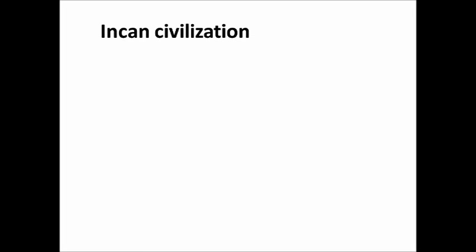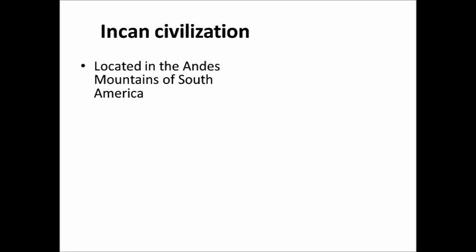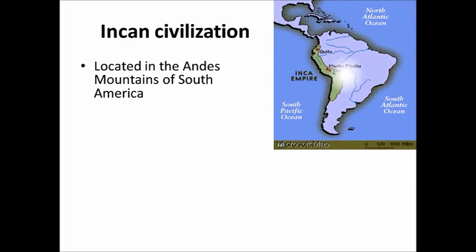The last civilization we're going to talk about is the only one from South America, located in the Andes Mountains. The Incas actually means 'children of the sun.' They were located along the west coast of South America in the Andes Mountains. Their cities include Machu Picchu and Cuzco, which was their capital. Today the countries would be Peru, northern Chile, Colombia, Ecuador, Bolivia, and parts of northern Argentina.